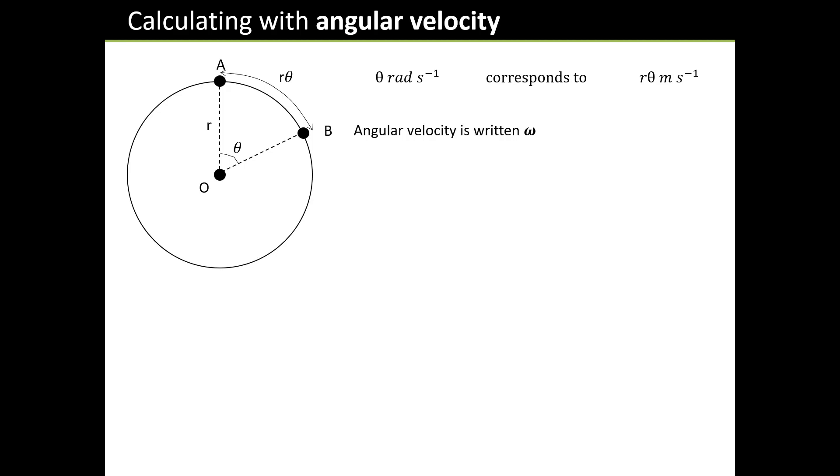There's a very simple relationship between the angular velocity here and the actual speed around the circle. Angular velocity is represented by this symbol, it's actually a lowercase omega. The velocity around the edge of the circle is going to be tangential to the circle itself. Provided we measure r in meters, the tangential velocity is given by rω.